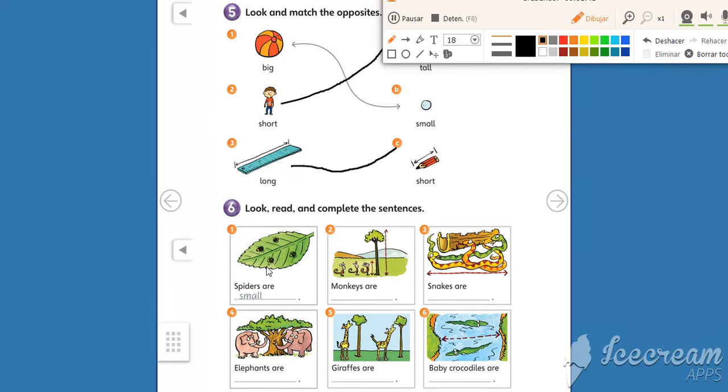Can you see the spiders, the number one? They're very small. The sentence says, spiders are small. Okay? We are using these adjectives.